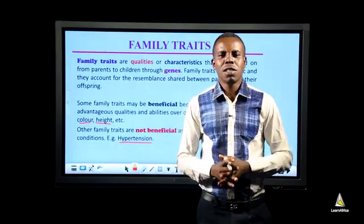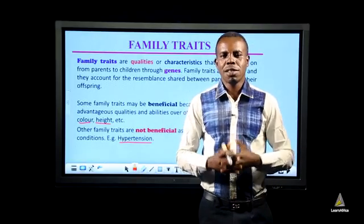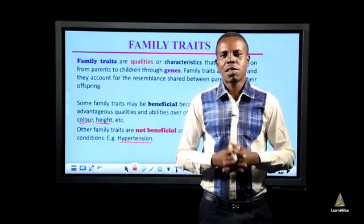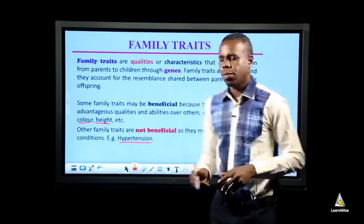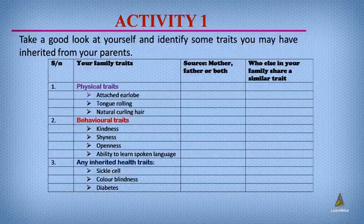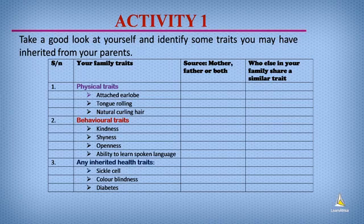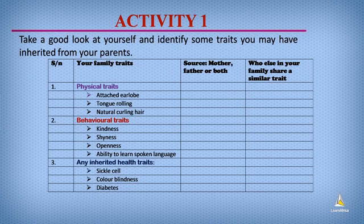At this moment, we are going to be taking an activity. This will guide us to understand family traits that we share with our parents. This is activity one. Take a good look at yourself and identify some traits you may have inherited from your parents. Now, you are going to get a writing material. Pause the video and get the writing material. When you are back, I want you to draw this table.